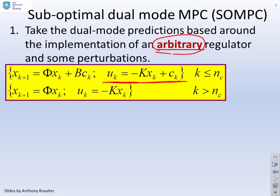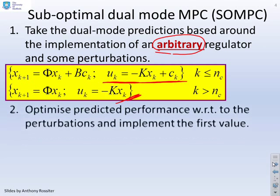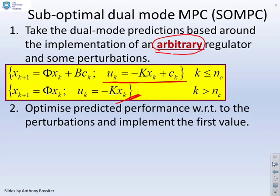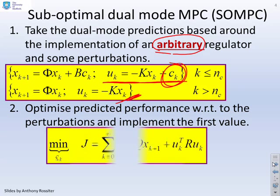So we had a transient mode, u equals minus kx plus c, and an asymptotic mode or terminal mode, u equals minus kx. What we want to do is optimize predictive performance with respect to these perturbations c and implement the first value.